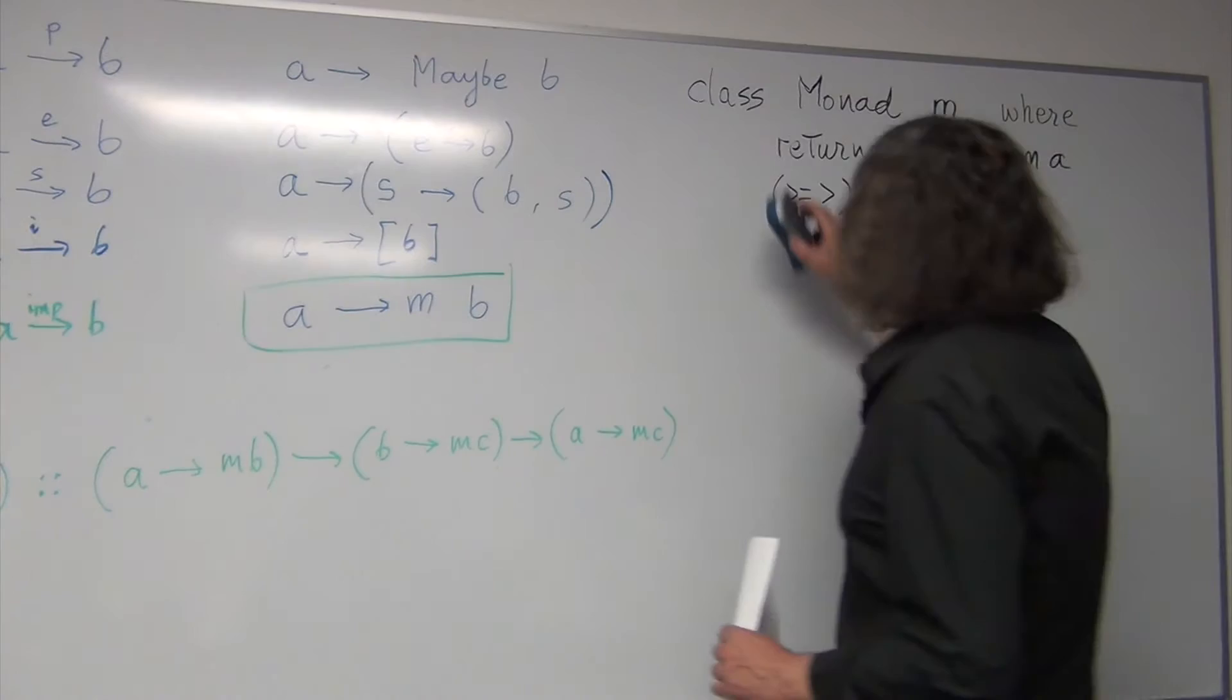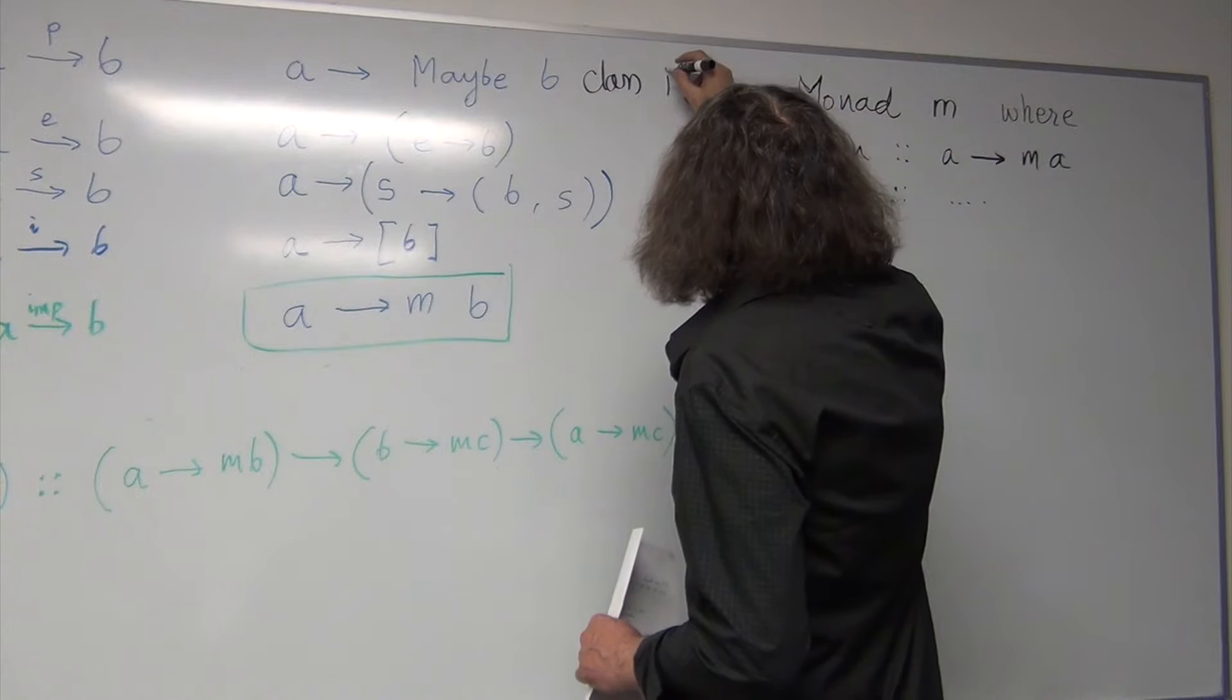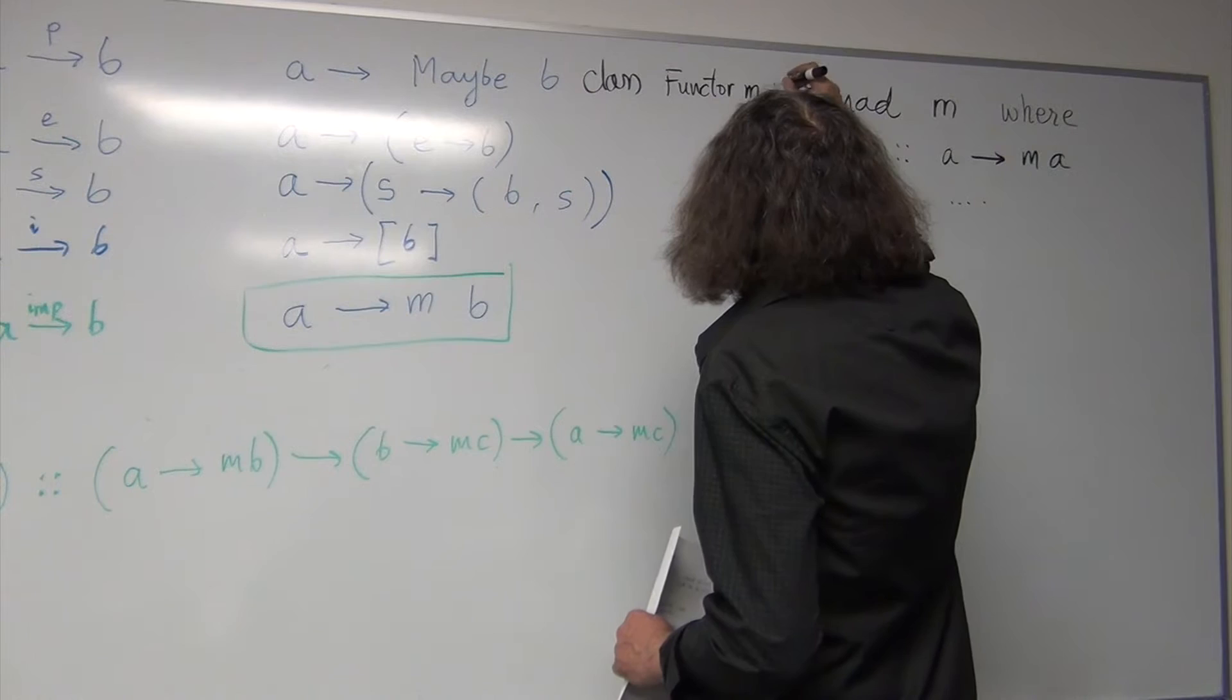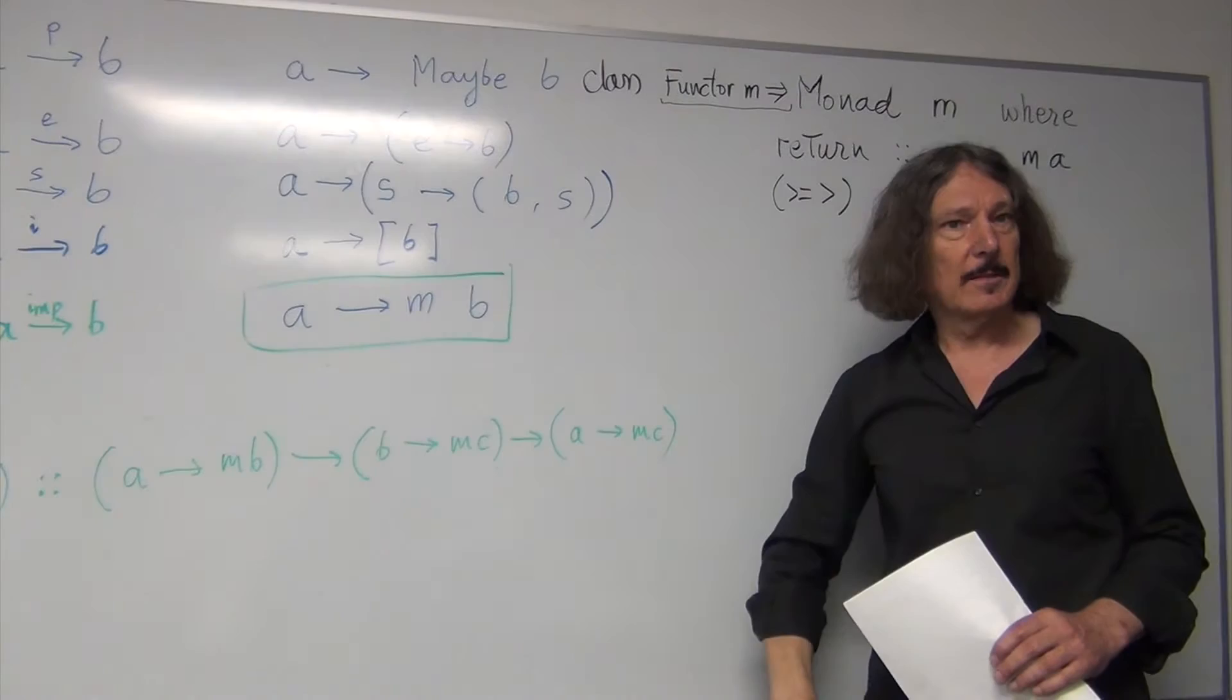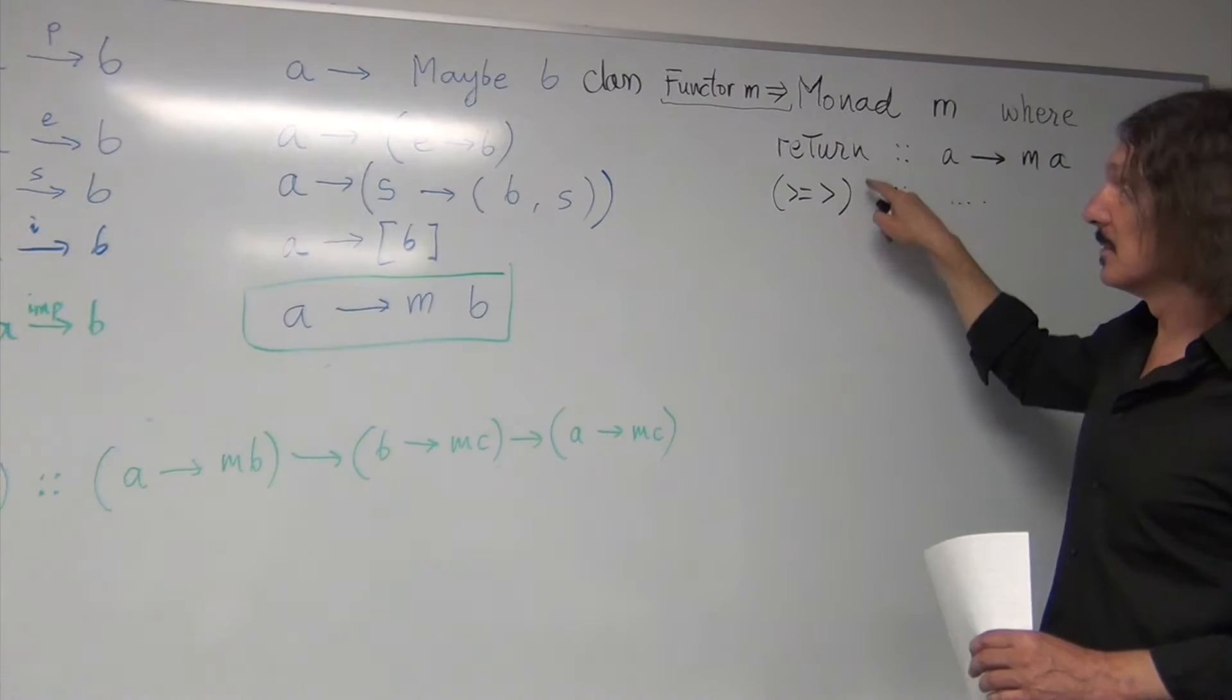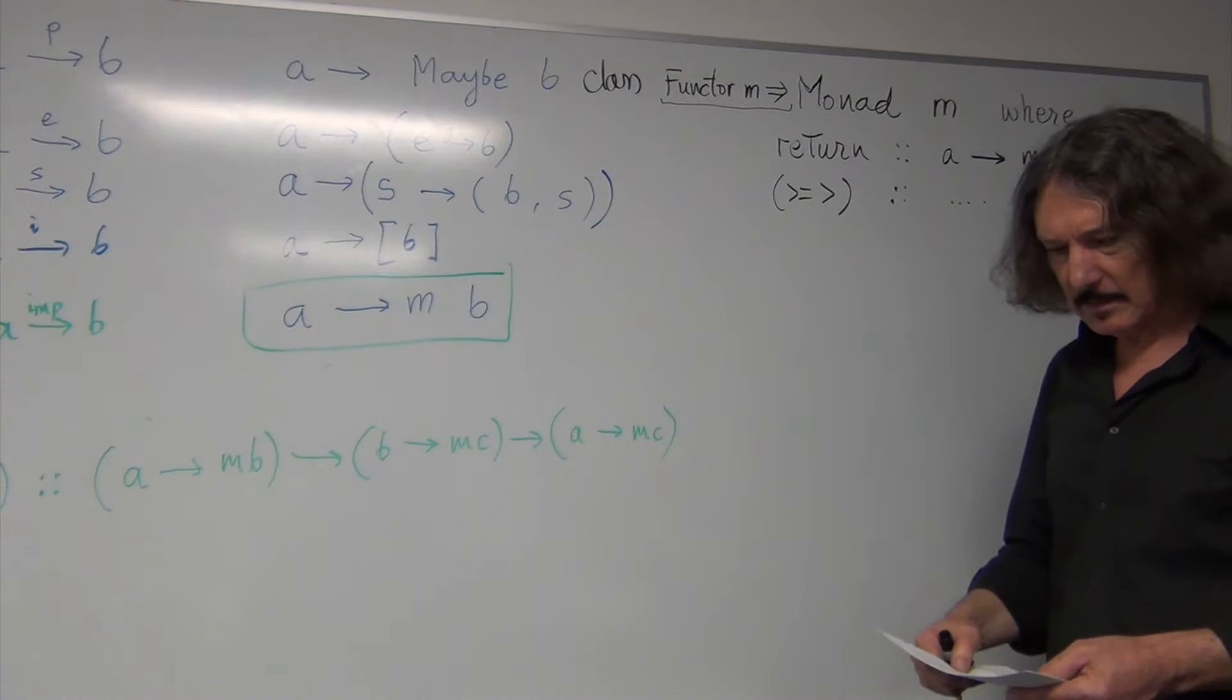So, this is done by saying, class functor M arrow Monad. So, I have inserted this functor M precondition constraint. But not only Monad has to support these two, but it also has to support F map. So, that's one way of saying this.